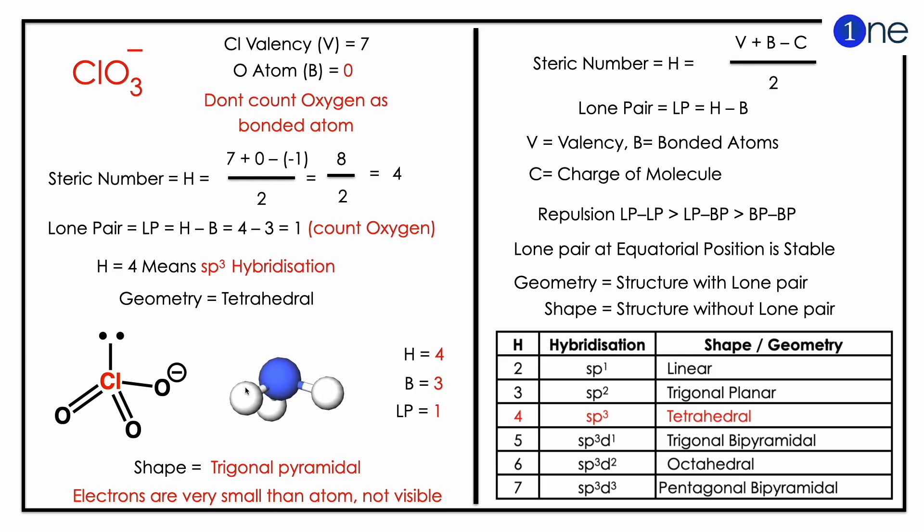To find the hybridization, you should know the steric number, which is H equals V plus B minus C, whole divided by 2. Here, the valency of chlorine is 7. The anion atom we should not count, so it is 0.